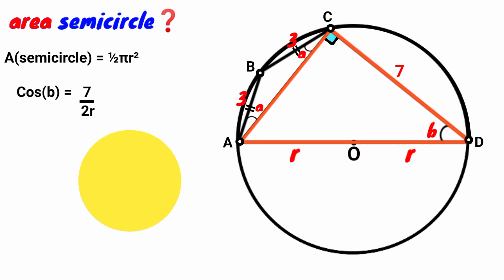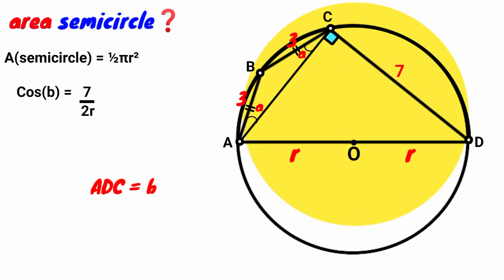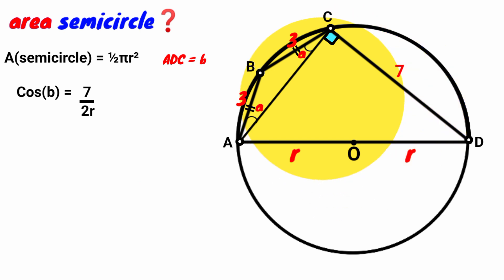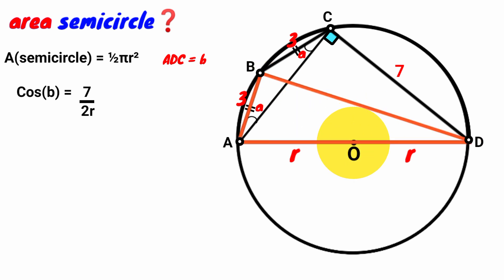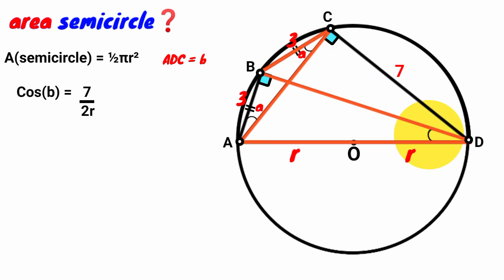We write out angle ADC = B. Next, we draw another chord connecting point B and point D. Look at this angle — it is subtended by the diameter, and we already mentioned that the angle subtended by a diameter to the circumference of a circle is a right angle. So this angle is also a right angle. Now, angles ACB and ADB are both subtended by arc AB to the circumference. We know from circle theory that the angle subtended by an arc to any point on the circumference is the same.